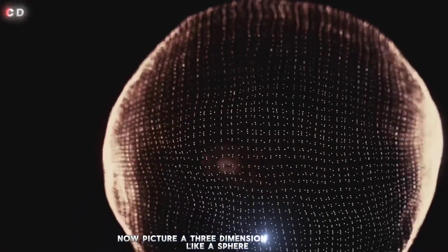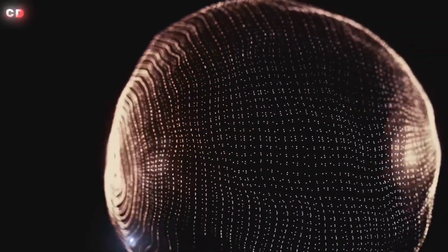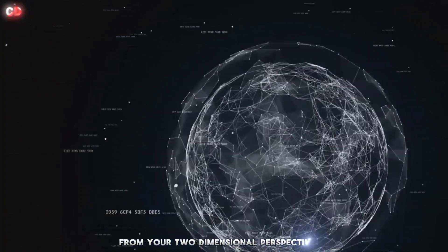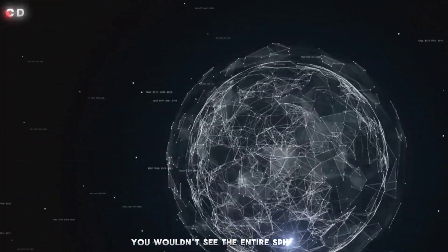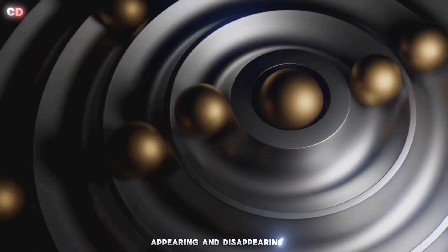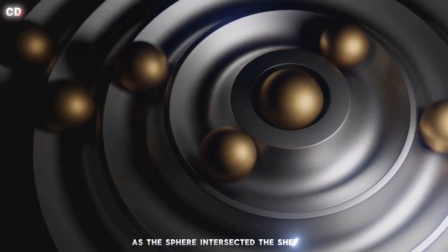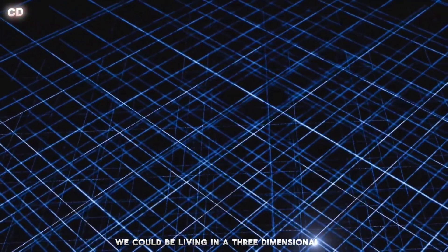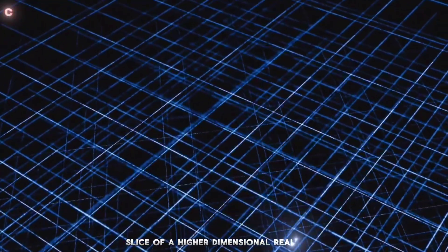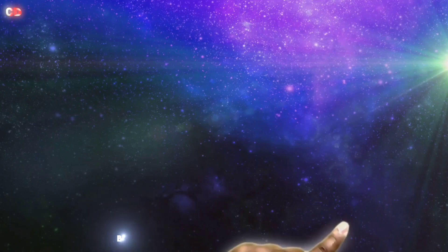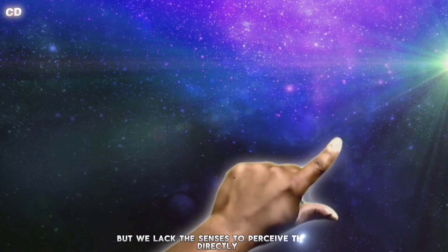Now picture a three-dimensional object like a sphere passing through the sheet of paper. From your two-dimensional perspective, you wouldn't see the entire sphere. You would only see a series of circles appearing and disappearing as the sphere intersected the sheet. Our situation might be similar. We could be living in a three-dimensional slice of a higher dimensional reality. The extra dimensions might be all around us, but we lack the senses to perceive them directly.